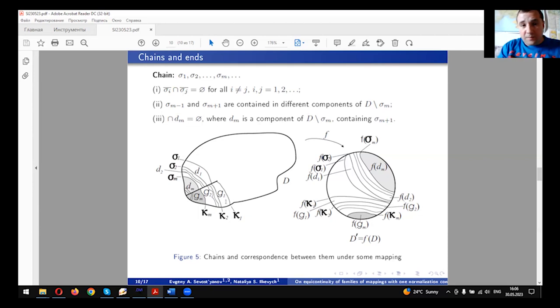And for homeomorphisms, we have the following property: chains map to chains. We see this fact in this picture. We have some chain σ, we have some chain K. The images of these chains are also chains as well.